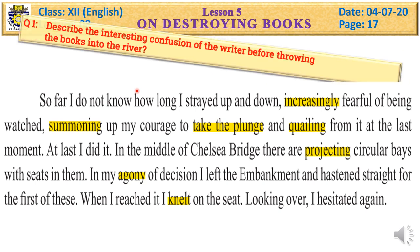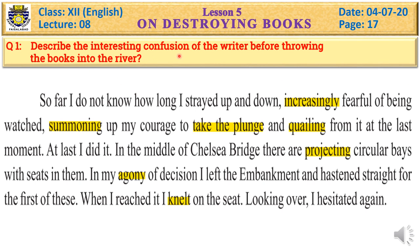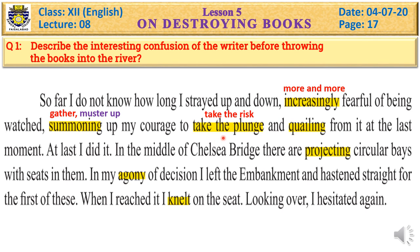In this part of the paragraph we'll discuss one question: describe the interesting confusion of the writer before throwing the books into the river. So far, I don't know how long I strayed up and down, increasingly fearful — more and more afraid — of being watched. Summoning up — gather, muster up — my courage to take the plunge, to take the risk, and quailing — fearing, backing away — from it at the last moment. He kept going toward the river to throw the books and then backing away in fear.